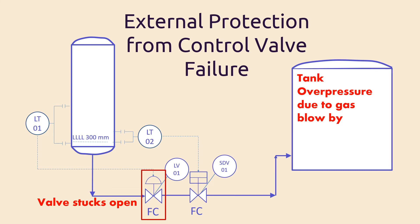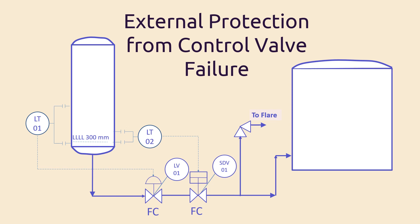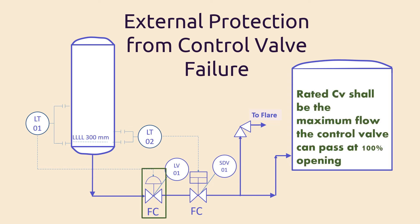Depending on the criticality of the overpressure consequences and the reliability of the instruments or the emergency shutdown system — which is usually studied in HAZOP and SIL analyses — we may need another layer of protection. There is a higher level of protection to protect the system from control valve failure, which is to install a PRV (pressure relief valve) for liquid services, or a PSV (pressure safety valve) for gas services. The safety valve shall be set at a certain pressure, and once it reaches that pressure, it shall open and the pressurized fluid is either sent to flare for gases, or to another downstream system for liquids. So if we need a PSV in our case where the overpressure will be due to gas flowing to the tank, we shall send the gas to the flare. The PSV shall be sized to handle the flow rate when the valve is at its rated Cv.